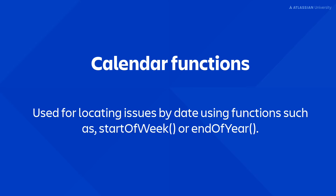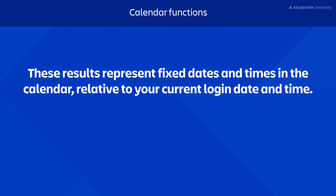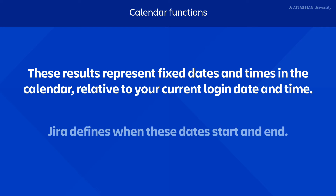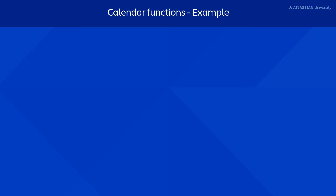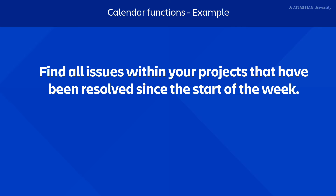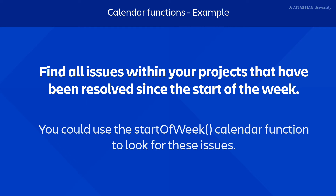Calendar functions are used for locating issues by date, using functions such as start of week or end of year. These results represent fixed dates and times in the calendar relative to your current login date and time. Jira defines when these dates start and end. For example, say you wanted to find all issues within your projects that have been resolved since the start of the week. You could use the Start of Week calendar function to look for these issues.